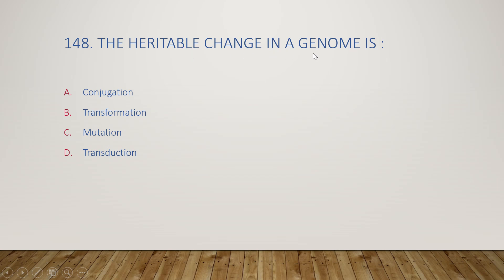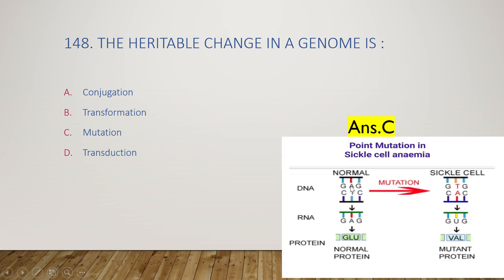The next question: heritable change in a genome is conjugation, transformation, mutation, or transduction? The right answer is option C, mutation. A heritable change in the genome is called mutation — for example, a change in one base which causes a heritable change in the genome.